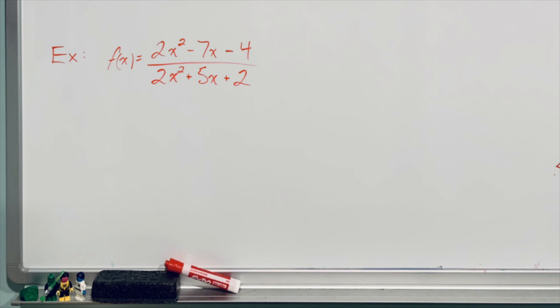Namely, I'm interested in whether there are any holes, vertical asymptotes, horizontal asymptotes, any x-intercepts, and whether there's a y-intercept. And in order to gain that information, what I have to do first is look at this rational function.